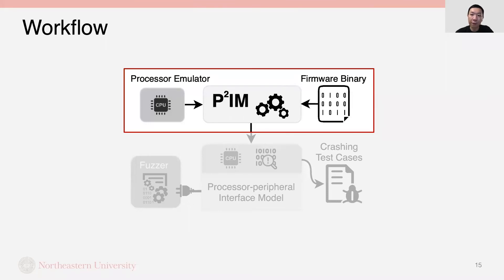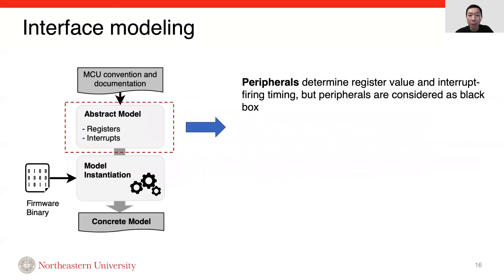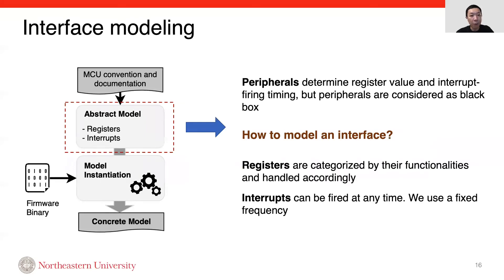In our workflow, the first step is to model the interface so that the firmware can execute in the emulator and perform peripheral operations. Modeling the interface is not easy. We realize it's the peripheral that determines register value and interrupt timing. However, we consider peripherals as black boxes. In our solution, registers are categorized by their functionalities and handled accordingly. As for interrupts, they can be fired at any time — we fire them at a fixed frequency. To abstract the model, we make many efforts, but it only needs to be done once for each MCU architecture.